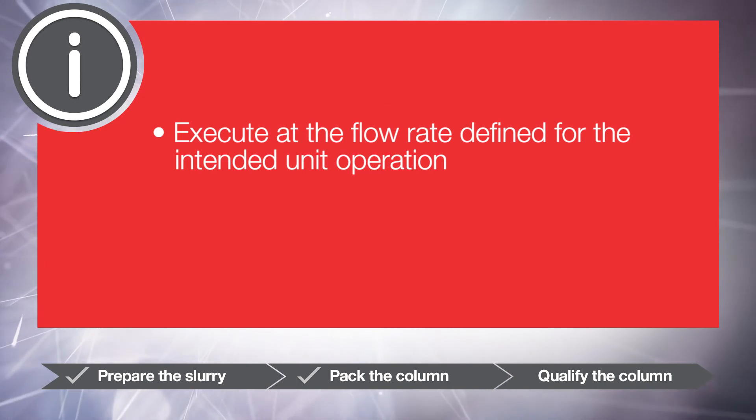If the packing buffer is different from the mobile phase, equilibrate the column for at least four column volumes with the mobile phase. Execute at the flow rate defined for the intended unit operation, typically 100 to 300 centimeters per hour. Monitor conductivity for sodium chloride. Qualification results depend on a number of factors, including the solutions and method used, scale, column hardware, and chromatography system. After you define a column qualification procedure for a specific system, column plus chromatography system, base the qualification acceptance criteria on historical values and ranges instead of theoretical qualification results. Performing the column qualification method consistently and reproducibly is critical to obtaining meaningful results.